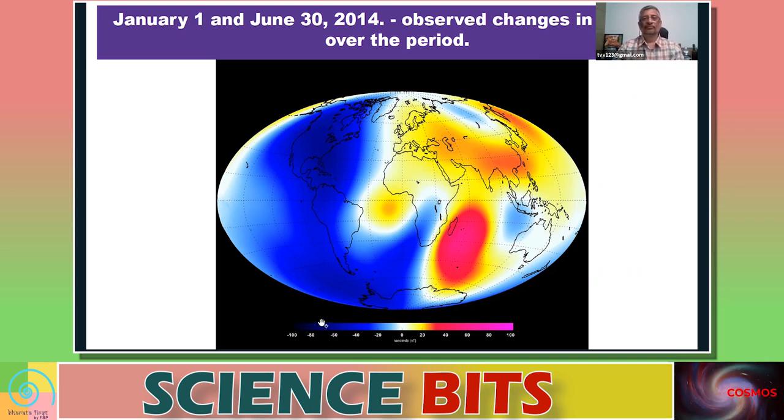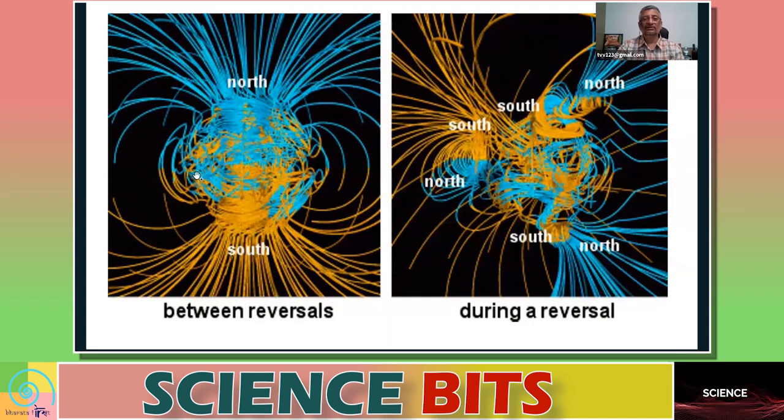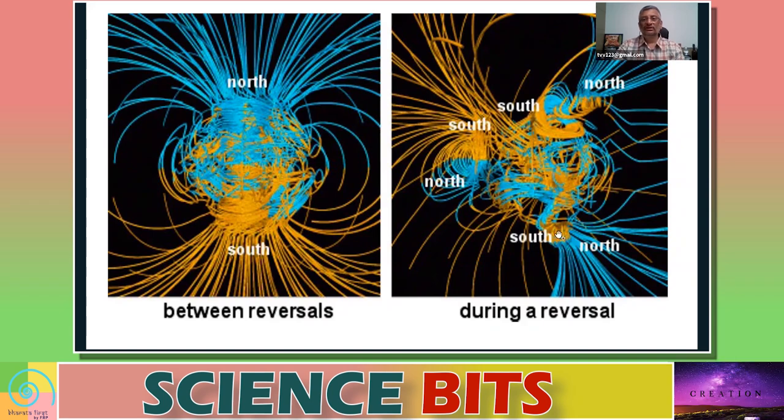And between reversals, although the magnetic field is not evenly distributed, there is some kind of coherence. So the north lines are in one place and south lines are in one place, but not exactly evenly distributed. But during the reversal there might be multiple norths and souths, because there'll be too many anomalies. And because of these anomalies, during the period of reversal there'll be complete chaos, chaotic behavior of magnetic lines. But then it'll again come to a settlement where the reversal, the north will come here and the south will go there. That kind of reversal will take place.